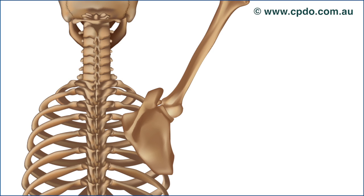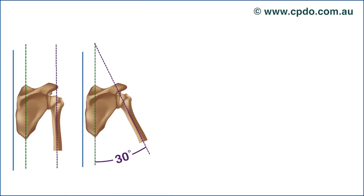This coordinated movement occurs in a predictable fashion, and any disturbance to this pattern is evidence of a muscular or joint dysfunction. Generally, in the first 30 degrees of shoulder abduction, the scapula remains stationary against the ribcage, with movement occurring only at the glenohumeral joint.